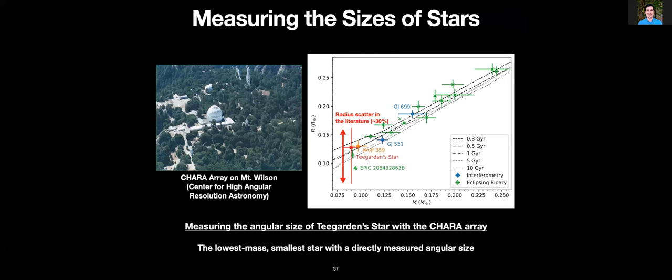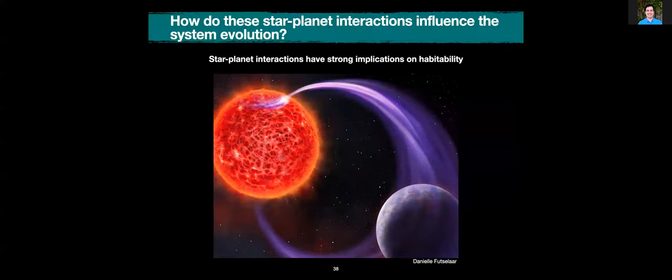I also have a program to directly measure the size of the second smallest planet host, Teagarden star, using the CHARA interferometer. It's composed of six one-meter telescopes that can be used in different configurations with baselines up to 330 meters, giving a resolution of about 50 milli-arc-seconds in the near infrared. This star currently has about a 30% scatter in its radius estimate from the literature. We're hoping to reduce that down to a 5% measurement, which will be the first time we can directly determine if these planet hosts have radius inflation or not. I actually just got the first data for this last week, so hopefully in the next couple of weeks I'll have it all reduced.